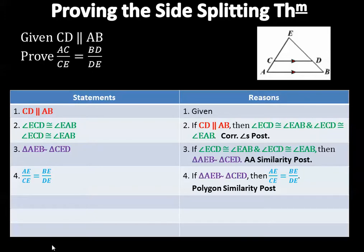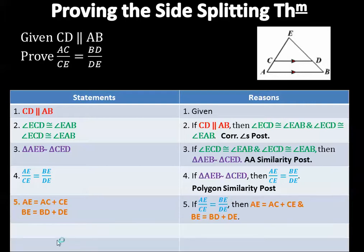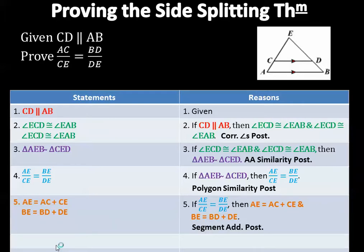The next idea: AE equals AC plus CE — that's saying segment A to E equals segment AC plus segment CE, which is basically a 'duh' statement. It works for the other side too: BE equals BD plus DE. The reason for that is the Segment Addition Postulate from last semester.